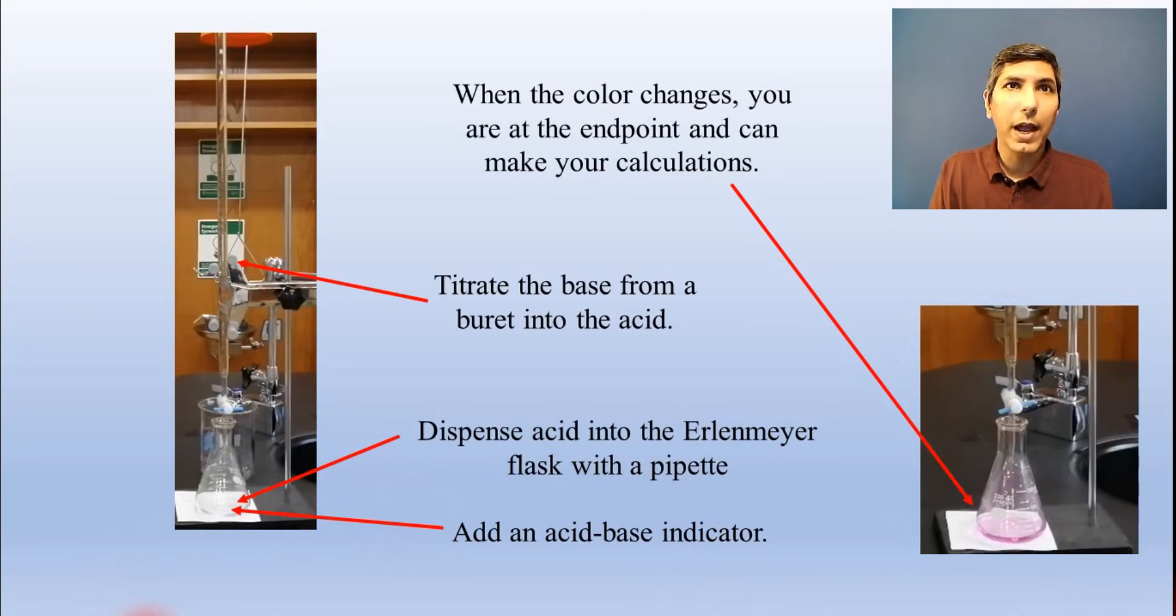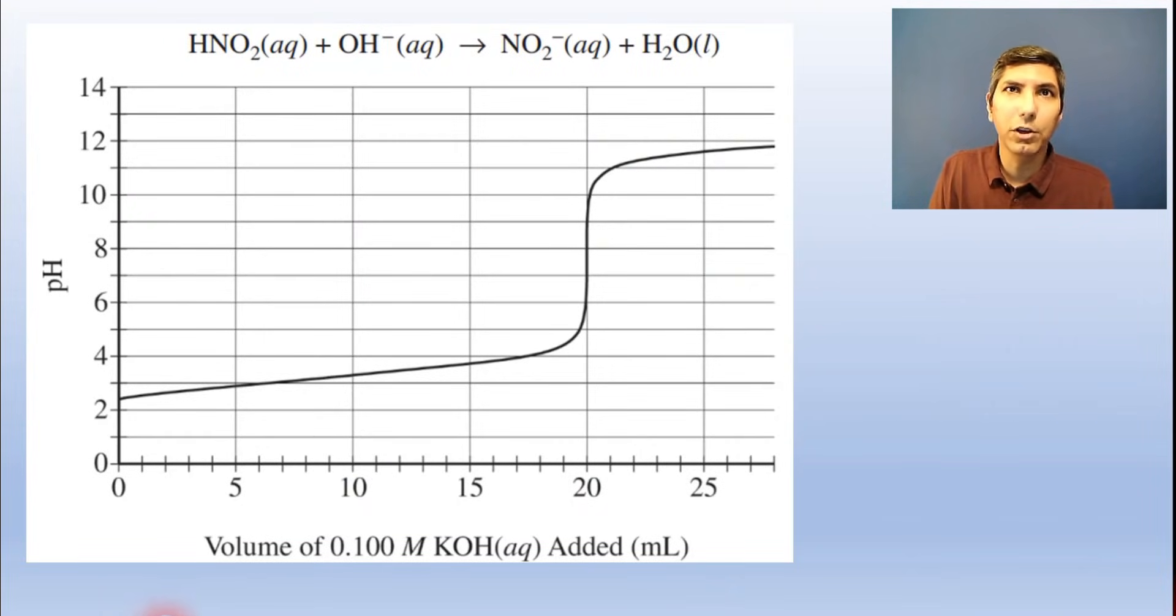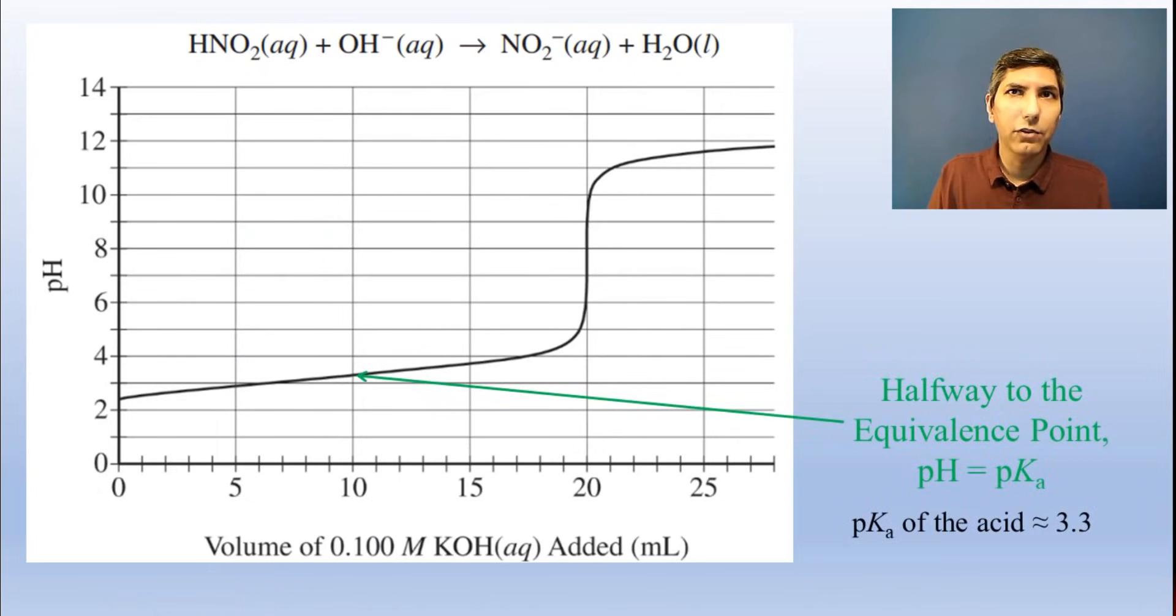I have a much more detailed discussion of titration curves in my full course video, but you need to know that the pKa, or the negative log of the Ka of the weak acid, is equal to the pH on your titration curve halfway to the equivalence point. And this inflection point represents the equivalence point.